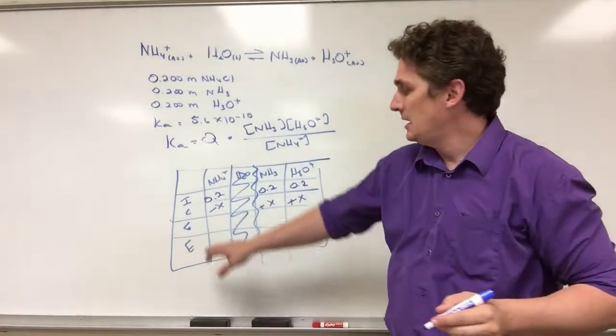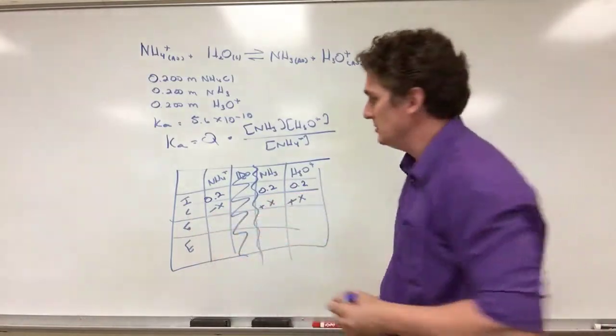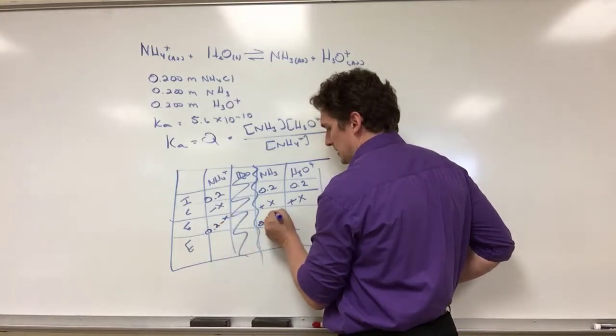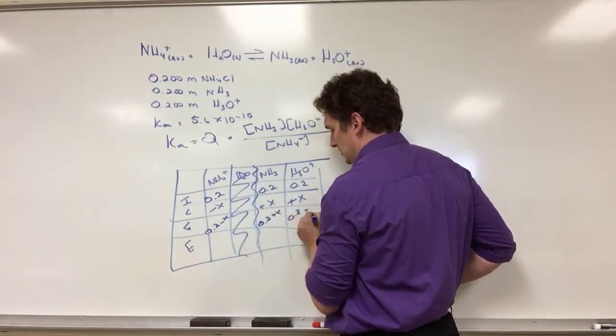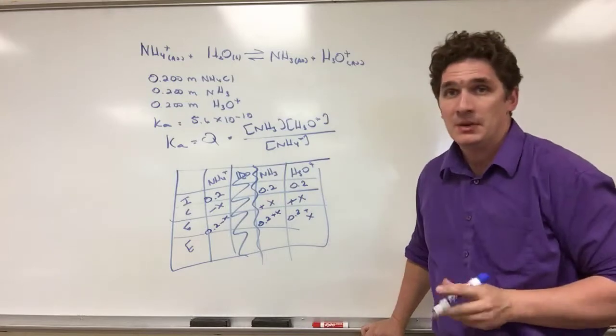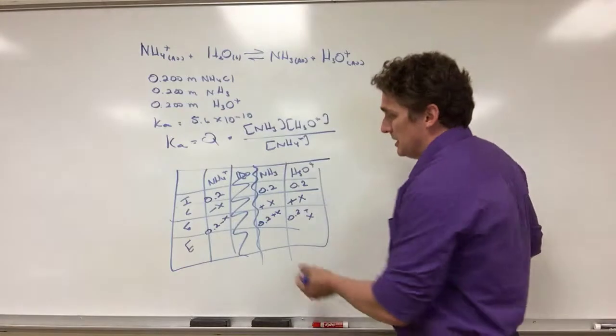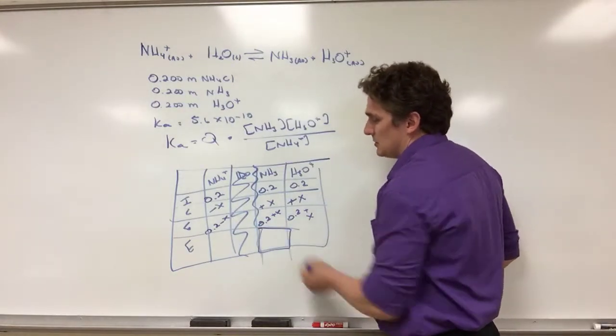And if I think about it, I know that the E row here is just the I row plus the C row, so I get 0.2 minus X, 0.2 plus X, 0.2 plus X. But I don't know the equilibrium values because in the case of this problem it wants to know what the equilibrium concentration of NH3 is, so I need to find this square.